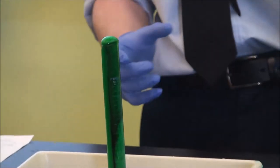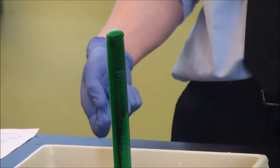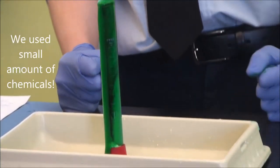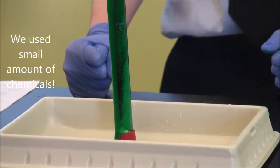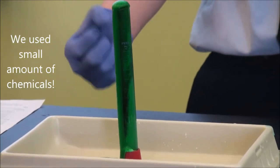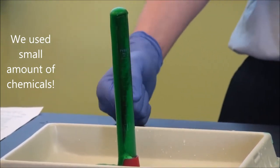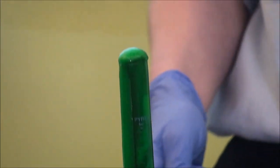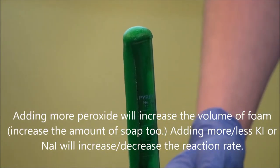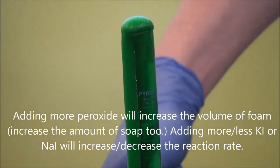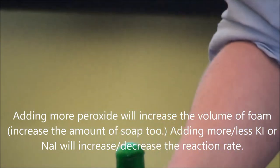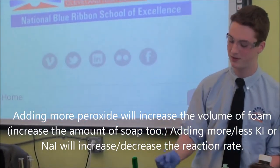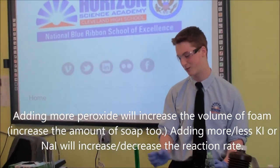So how this works is it's an exothermic reaction meaning that it gives off heat. Our catalyst, the sodium iodide, speeds up the decomposition of the hydrogen peroxide. It creates water and oxygen gas, which causes the soap to foam up and become foamy.